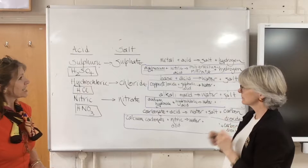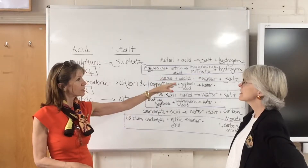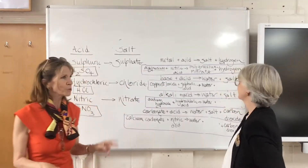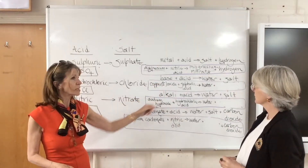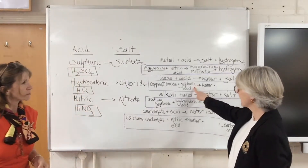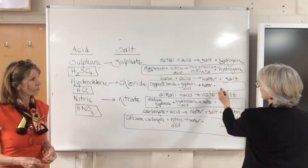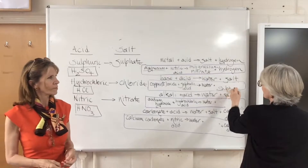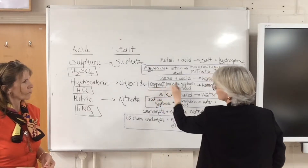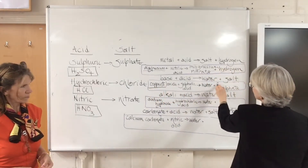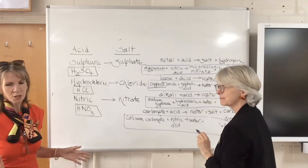The next general equation is base plus acid gives water plus salt — ORES. The base we're using is copper oxide and the acid is sulfuric. Sulfuric acid makes sulfate salts, and the metal comes from the copper oxide, so it must be copper(II) sulfate.